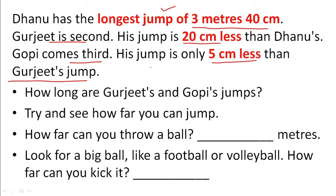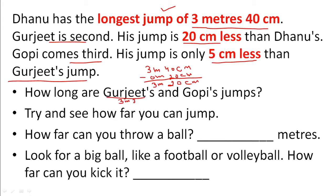How long does Gurjit jump? Dhanu jumps 3 meters 40 centimeters. Gurjit jumps 20 centimeters less, so we subtract 20 centimeters. Keep in mind: subtract centimeters from centimeters, meters from meters. 40 minus 20 equals 20 centimeters, and meters stay at 3. So Gurjit jumps 3 meters 20 centimeters.